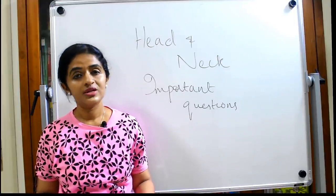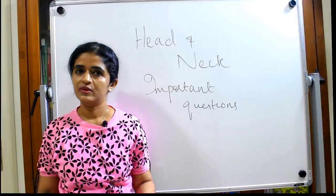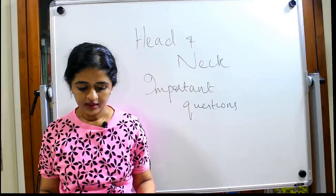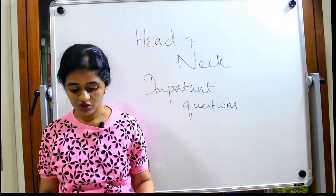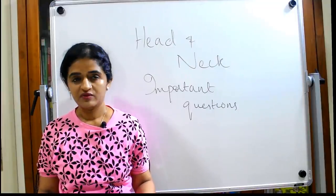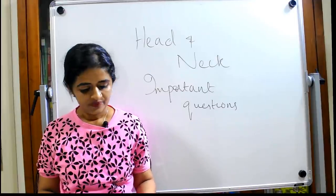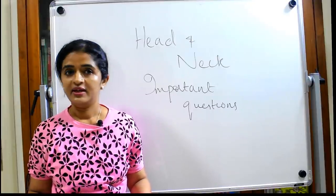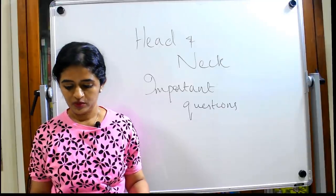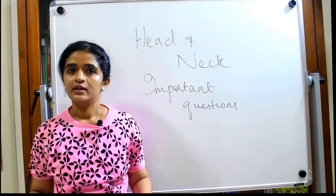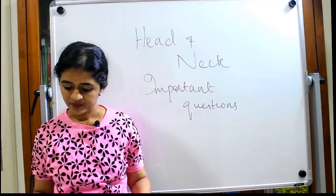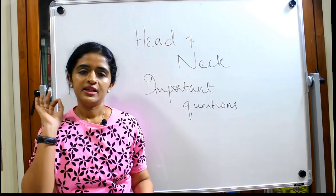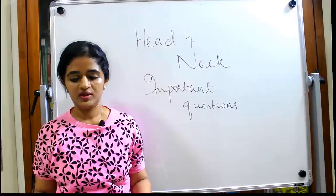The applied aspect includes Bell's palsy, which is again a favorite short note. You should know the formation of the retromandibular vein — that's a favorite question. The facial artery can also be asked as a short note. Know the different layers of the eyelid, and the lacrimal apparatus. Parasympathetic innervation of all the salivary glands and the lacrimal gland — that pathway is very very important.